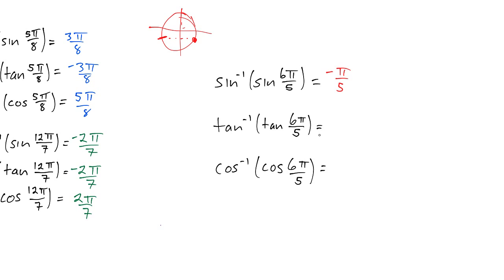For tangent, we also need to change, but now we want to be in the first quadrant, because then tangent will be positive like it is in the third quadrant. So, in this case, it will be positive π over 5.